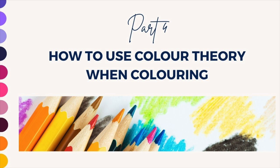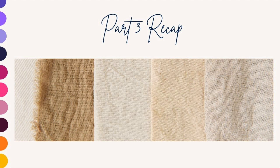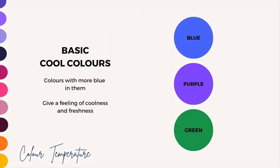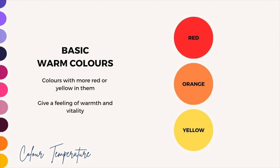Before we get into that, let's do a quick recap of what we covered in part 3. In part 3 we spoke about colour temperature and neutral colours. As we look at the colour wheel, if we draw a line vertically down the colour wheel we have our cool colours on the left and our warm colours on the right. Our basic cool colours are blue, purple and green — colours that have more blue in them and give a feeling of coolness and freshness. Our basic warm colours are red, orange and yellow — colours with more red or yellow in them that give a feeling of warmth and vitality.